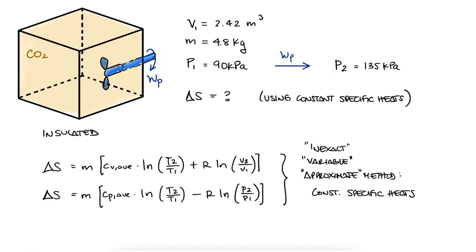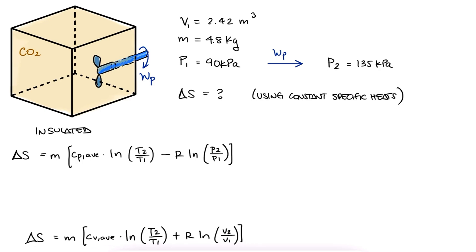The first expression is in terms of the specific heat at constant pressure Cp and in terms of the pressure values, which we have. The second expression is in terms of the specific heat at constant volume Cv and in terms of the volumes.